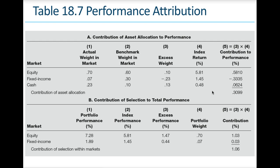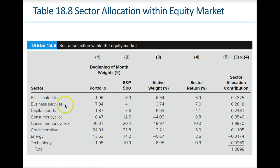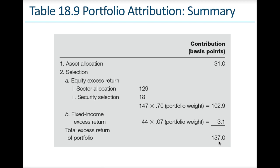Looking at actual weights versus benchmark weights, if a managed portfolio goes much lower on fixed income but higher on equity and cash, we can measure how these excess weights contributed to return. Sector selection within equity markets involves looking at different sectors, their percentage in the portfolio, active weight, sector return, and whether the portfolio outperformed or underperformed the baseline — ultimately highlighting the total excess return of the portfolio over the benchmark.